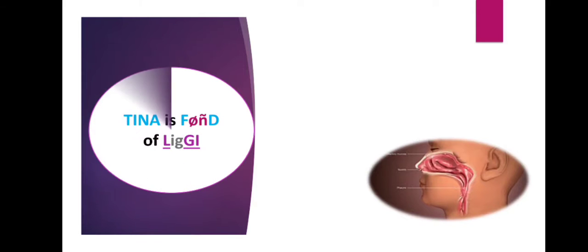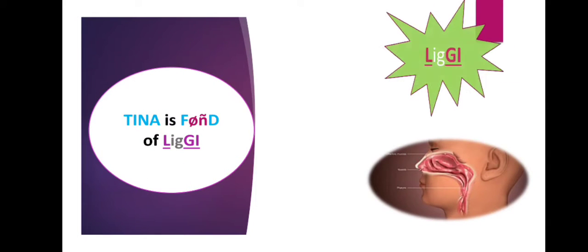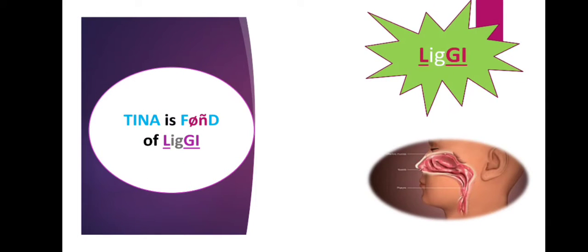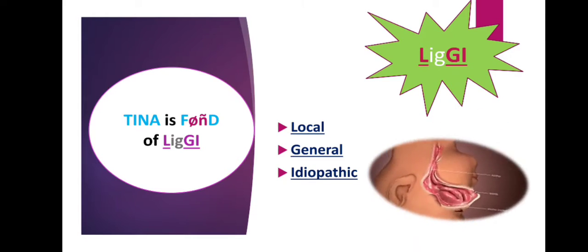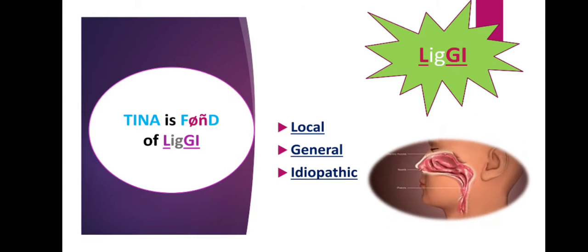The causes are divided into three categories. From the word 'Leggy,' we see that L, G, and I are capital letters — L stands for Local, G for General, and I for Idiopathic. So the causes of epistaxis can be divided into local, general, and idiopathic. First we will look at the local causes.